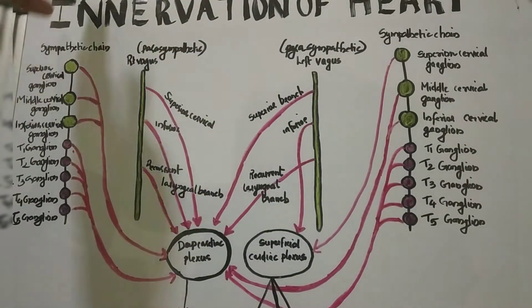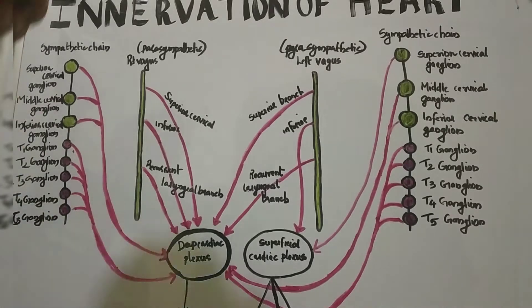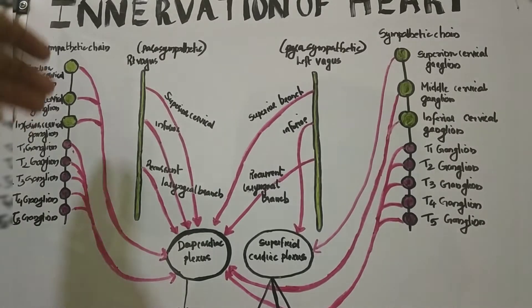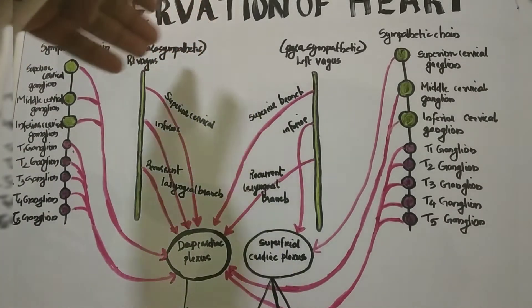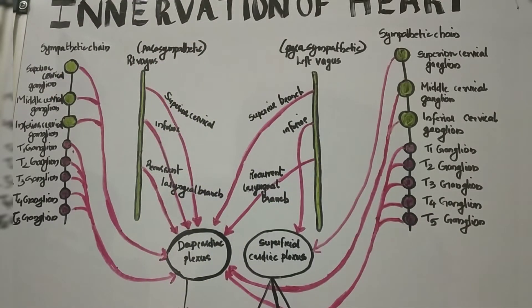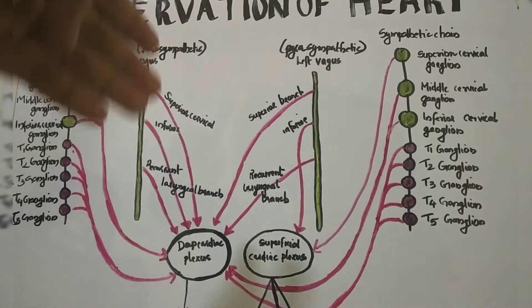The sympathetic nerve supply is derived from the upper 4 to 5 thoracic segments of the spinal cord. The parasympathetic nerve supply is through the vagus nerve — the branches of the vagus supply the heart.